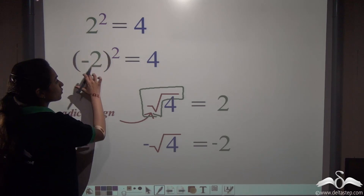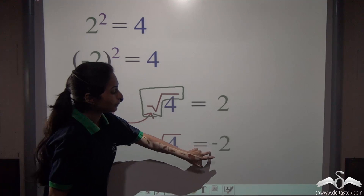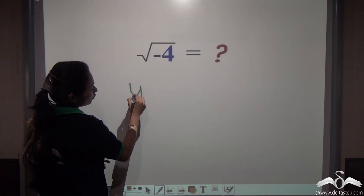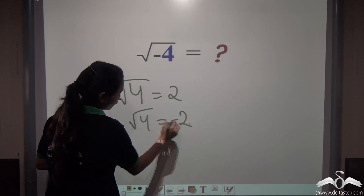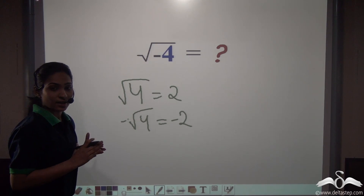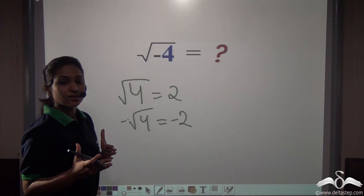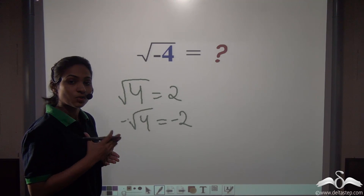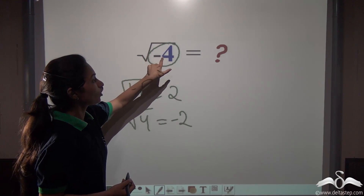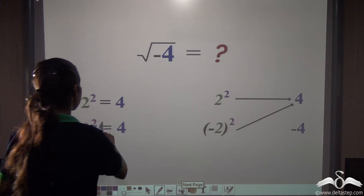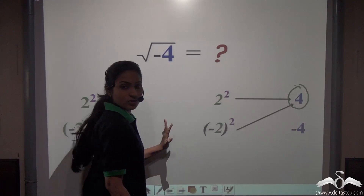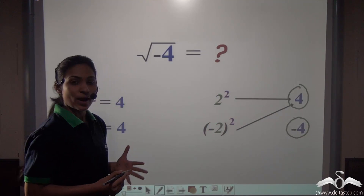If you want to denote a negative square root, we put a minus sign before the radical sign to show that minus 2 is the square root of 4. But what about the square root of minus 4? We have studied that all square numbers are positive, whether from positive or negative numbers. So minus 4 cannot be a square number, and we cannot find the square root of minus 4. Square numbers are always positive.